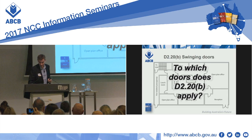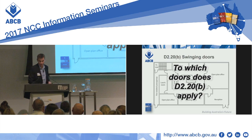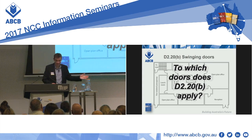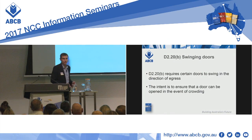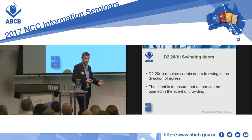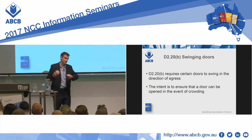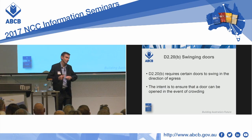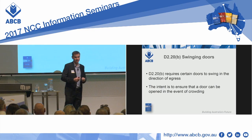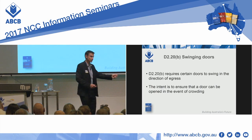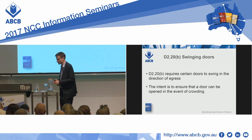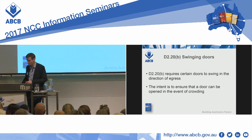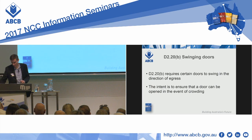Doors — does D220B apply? This is the provision which requires particular doors to swing in the direction of egress. The intent is to ensure that should crowding occur at the door, it's hard to pull the door towards you. Swinging it away in the direction of egress allows people to get out. People would be aware that there have been some horrible tragedies on account of swinging doors.